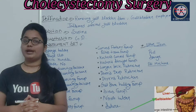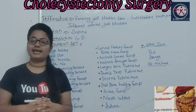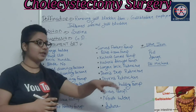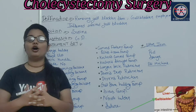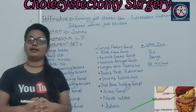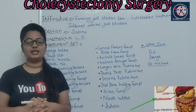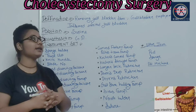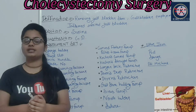The gallbladder is present on the right side of our body, on the lower side of the liver. The liver stores bile juice, which is kept in the gallbladder. Now, why is gallbladder surgery or cholecystectomy surgery performed?